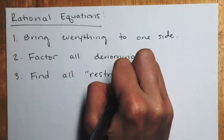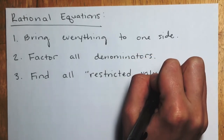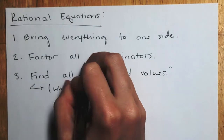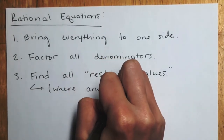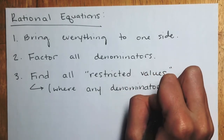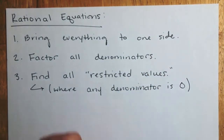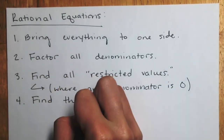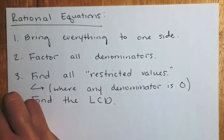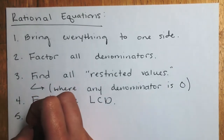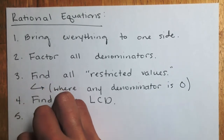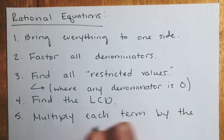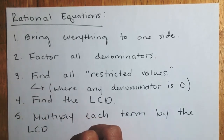The reason we factor is that we need to find all restricted values — these are where any denominator equals zero. Then from all those factors in the denominator we want to find the LCD.